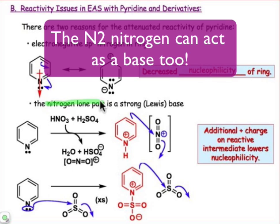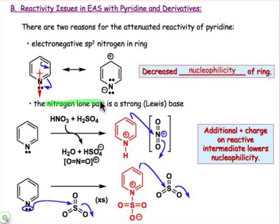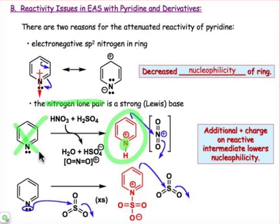That other mode of reactivity is what we've already discussed in the previous webcast — the nitrogen lone pair functions first as a base. It's going to pick up a proton, and that takes place before any electrophilic aromatic substitution occurs. So now we have to do the subsequent electrophilic aromatic substitution not on pyridine, but rather on the pyridinium cation, which is an even poorer nucleophile than pyridine is.